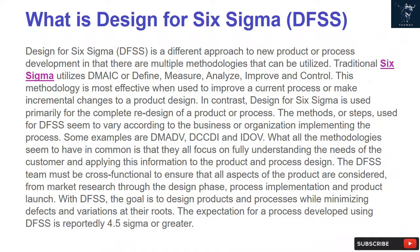The methods or steps used for DFSS seem to vary according to the business or organization implementing the process. Some examples are DMADV, DCCDI, and IDOV. What all the methodologies have in common is that they all focus on fully understanding the needs of the customer and applying this information to the product and process design. The DFSS team must be cross-functional to ensure all aspects of the product are considered, from market research through the design phase, process implementation, and product launch. With DFSS, the goal is to design products and processes while minimizing defects and variations at their roots. The expectation for a process developed using DFSS is reportedly 4.5 sigma or greater.